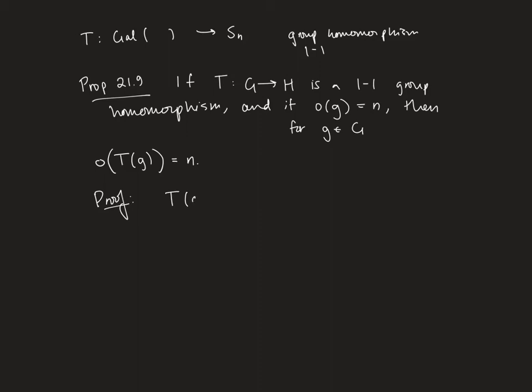If I think about taking T(g) and raising it to the nth power, it's a group homomorphism and that means it preserves multiplication. So this is going to be T of g to the nth power. g to the nth power is the identity because g has order n. And so that's T of the identity. And one of our properties of homomorphisms is that it takes the identity to the identity. So this is the identity in G and it takes us to the identity in H.